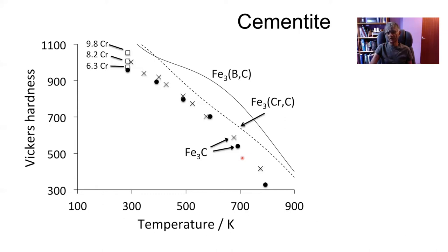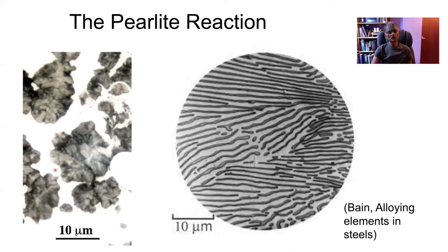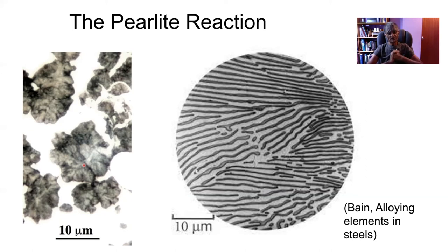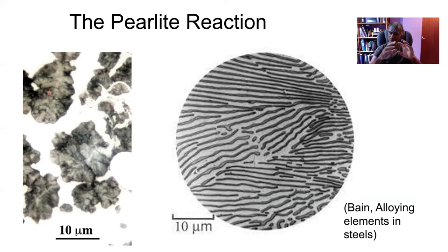Pearlite grows as spheroids beginning at the austenite grain boundaries. Because it is a reconstructive transformation, it can grow across the austenite grain boundaries into different grains. On an optical microstructure scale, if the interlamellar spacing is relatively fine compared with the wavelength of light, we see iridescent colors — and that is why it is called pearlite, because some of the shells on sea creatures have the same sort of iridescence.